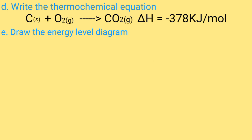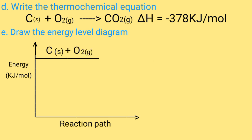Part e: Draw the energy level diagram. When you're doing the energy level diagram for an exothermic reaction, the arrow goes down because the heat content of product is less than heat content of the reactant. You draw the y-axis with energy in kilojoules per mole, the x-axis put the reaction path. Then you place your reactants, that is carbon plus oxygen, at the top. Then arrow goes down to get the product CO₂. Then enthalpy change is 378 kilojoules per mole.